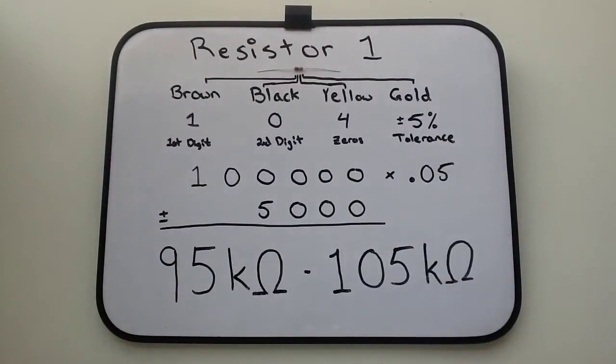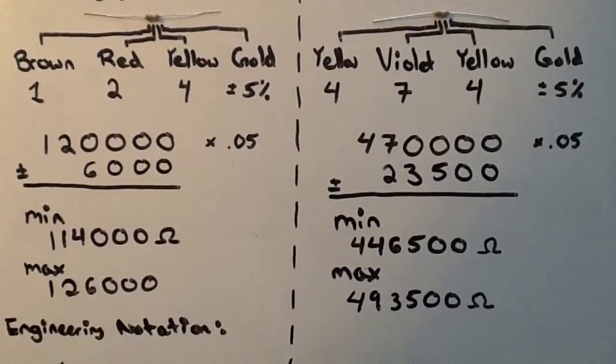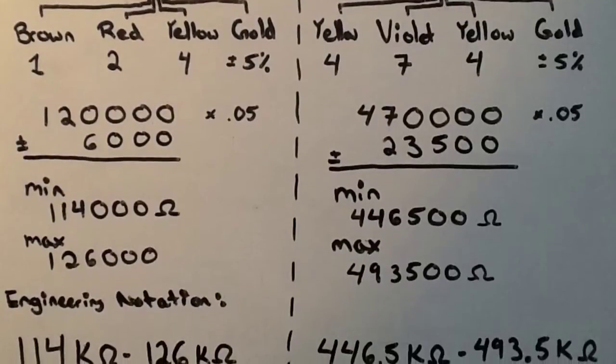These values should look like this in engineering notation: 95k ohms to a max 105k ohms resistance. Here are the resistance values of resistor 2 and resistor 3.